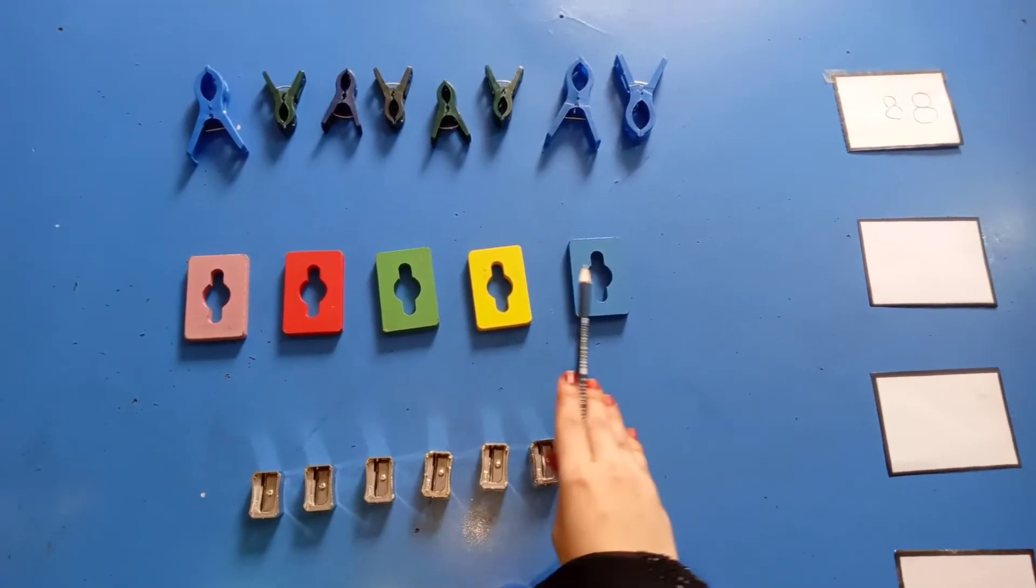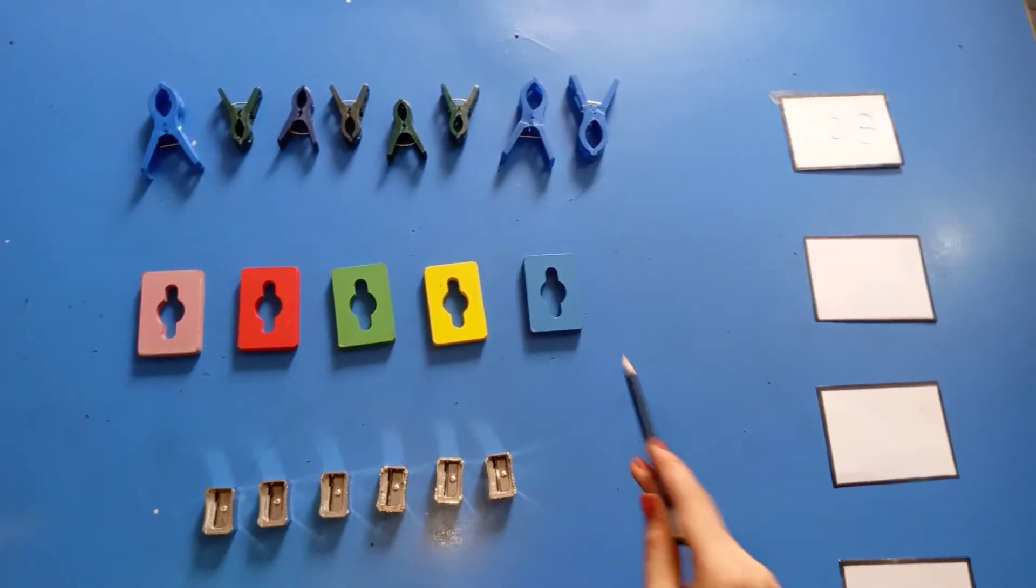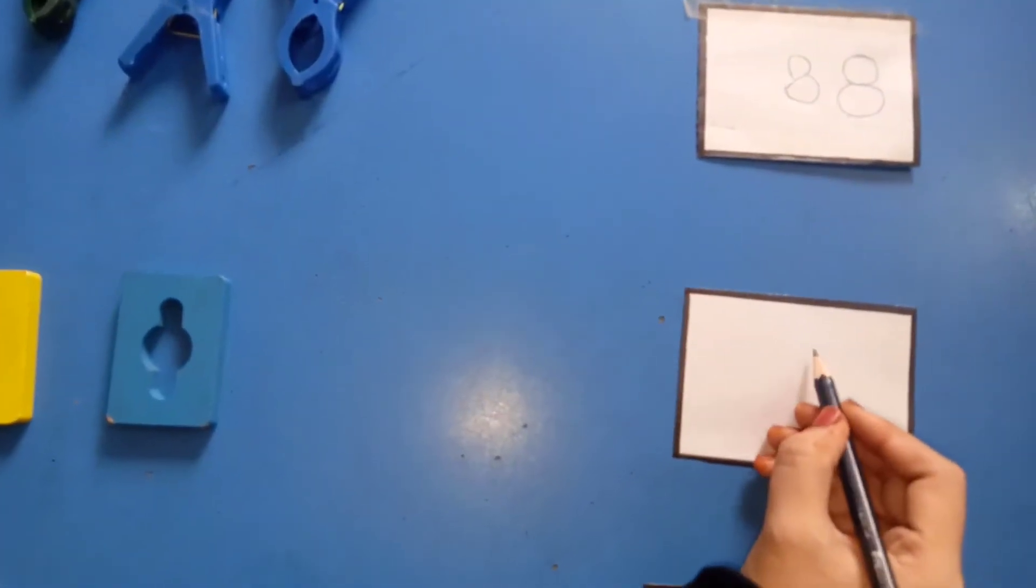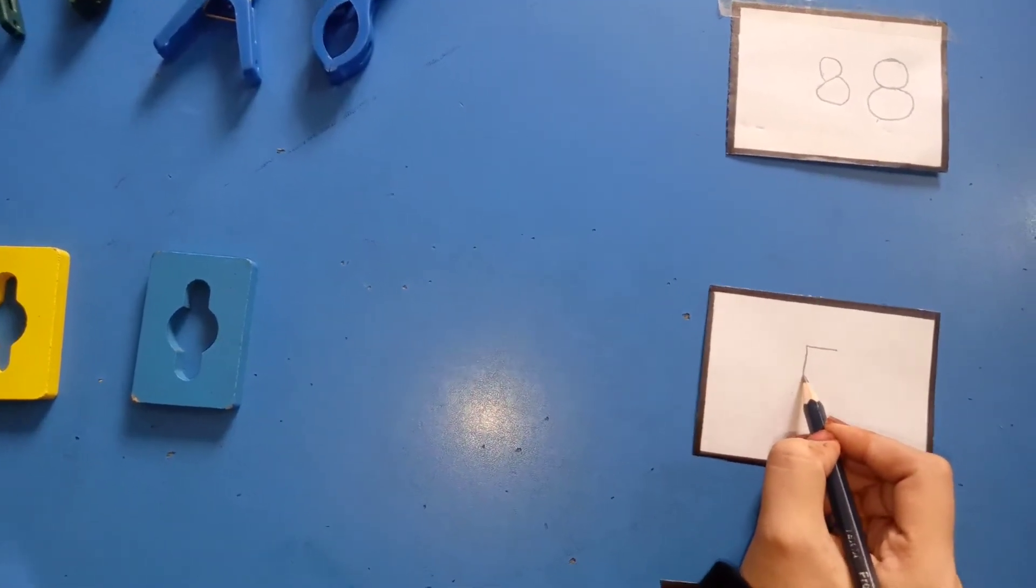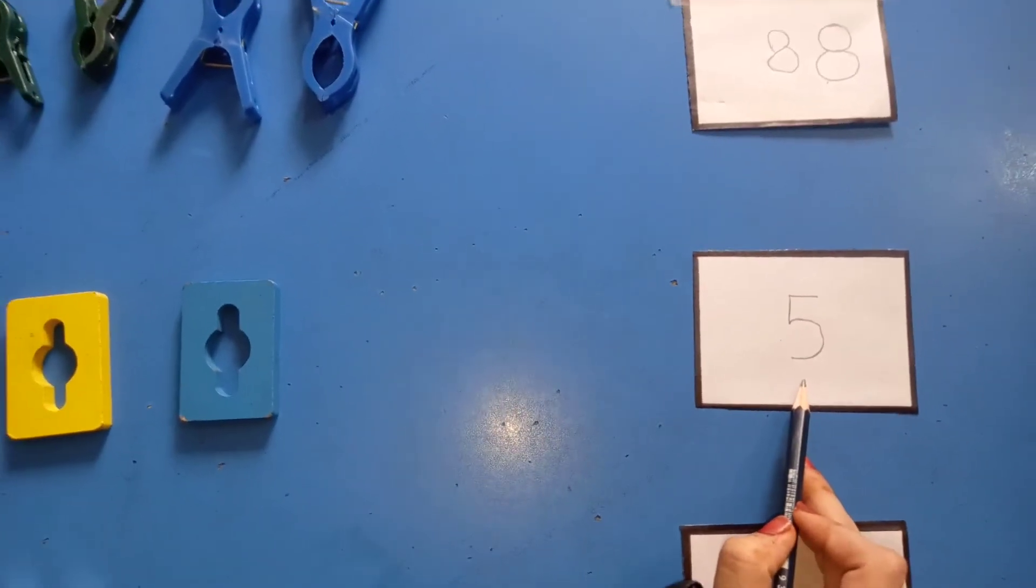five. How many rectangles are there? There are five rectangles. So, we write here. Five. Go straight, come down, make a half circle. Five. Okay, Munna.